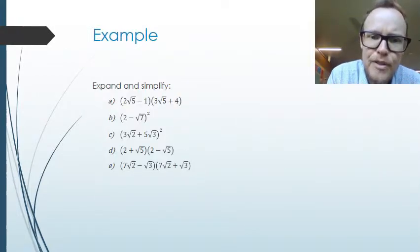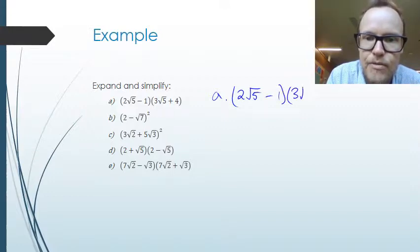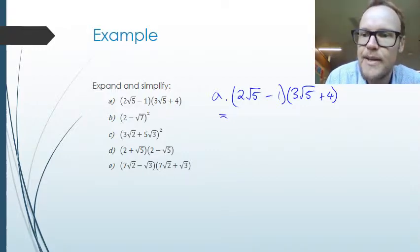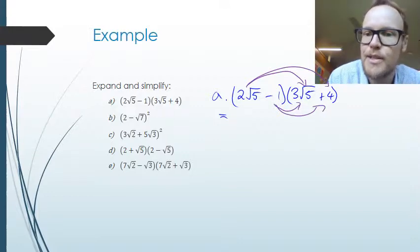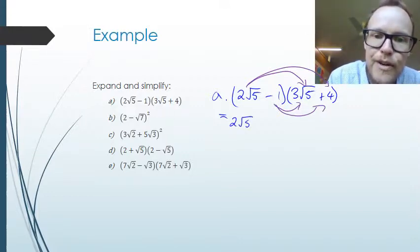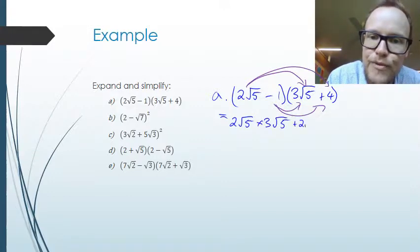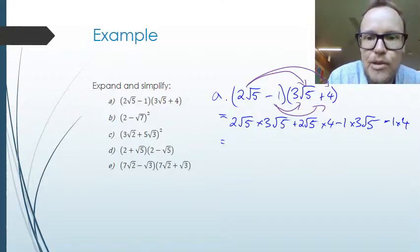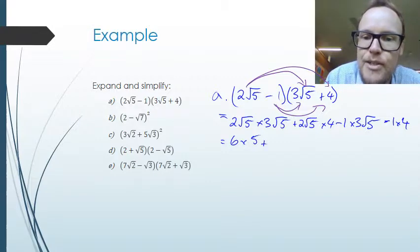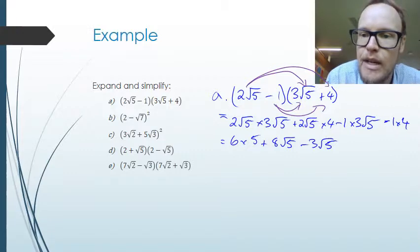Looking at some examples now. The first example, part A, is 2 root 5 minus 1 times 3 root 5 plus 4. If we expand it out, we need to do 2 root 5 times 3 root 5, then 2 root 5 times 4, then minus 1 times 3 root 5, and minus 1 times 4. So we get 2 root 5 times 3 root 5, plus 2 root 5 times 4, minus 1 times 3 root 5, and then minus 1 times 4. Simplifying: 2 times 3 is 6, root 5 times root 5 is 5, giving 30, plus 8 root 5, minus 3 root 5, minus 4.